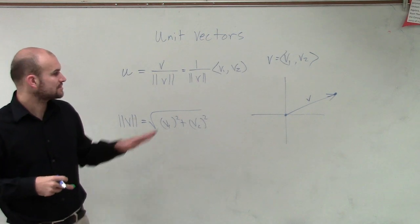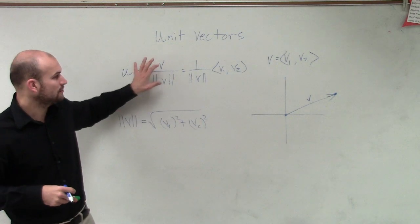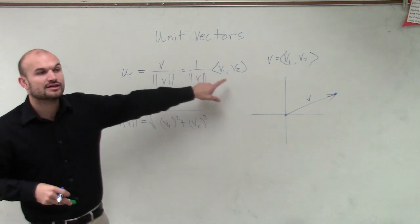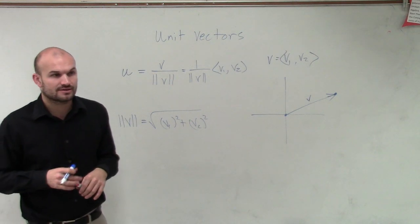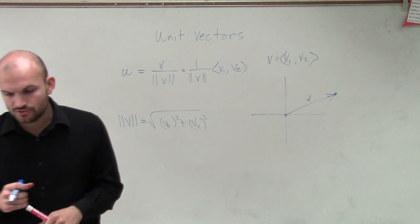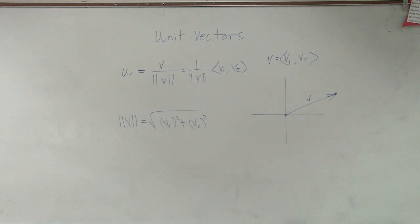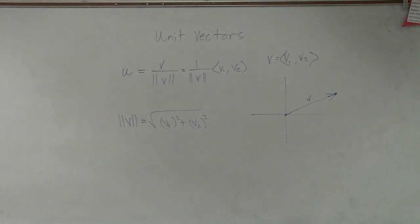But I want to let you know that the unit vector has a magnitude of 1. And all we simply do is take the component form of the vector and divide it by its magnitude to find the unit vector. But there are two other unit vectors that are very important that we're going to get to.